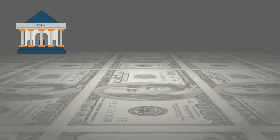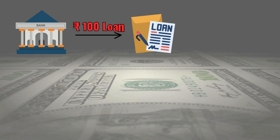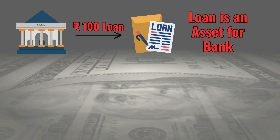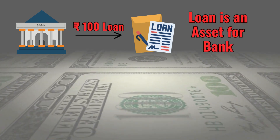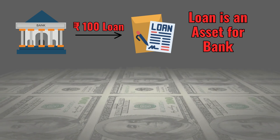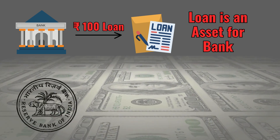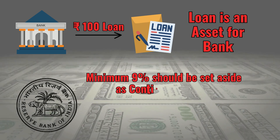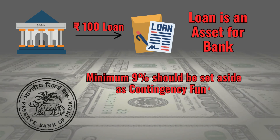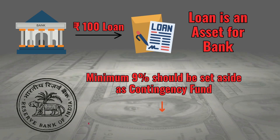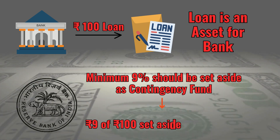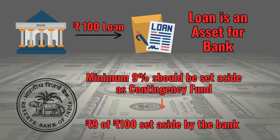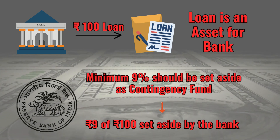So let's say that a bank disburses loans worth Rs.100. Remember, a loan is an asset for the bank because it gets interest on it and will also be repaid at a certain period. Now, RBI rules state that a minimum of 9% should be set aside from the bank's coffers — a minimum of Rs.9 on a Rs.100 loan of its own capital should be locked up for contingencies.